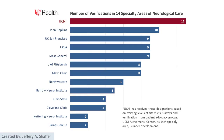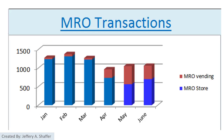In the final version, we remove the gradient background to make it clearer and easier to read. Now let's look at another example comparing vending transactions to store transactions. What is the number one problem? You may see a lot of issues.